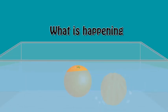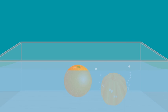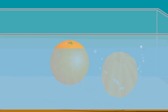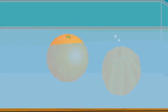What is happening? An orange with a peel is actually heavier than an unpeeled orange. Therefore, the heavier orange must sink and the peeled orange must float. But it is vice versa.